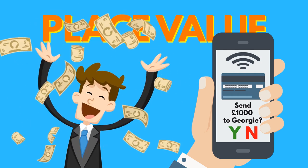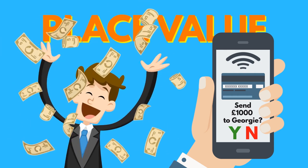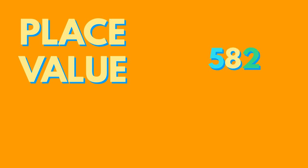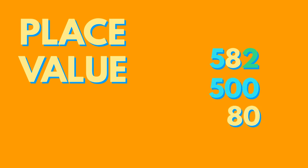Place value helps us to understand that 582 is made up of 500, 80, and 2. The highest value is on the left. The columns stand for hundreds, tens, and units.